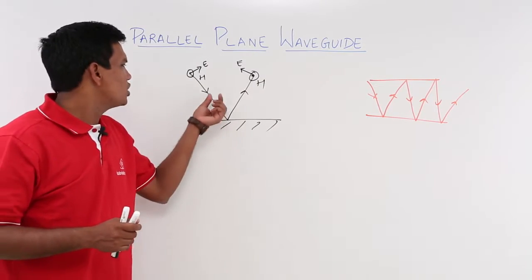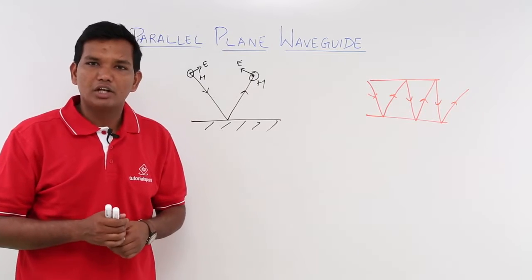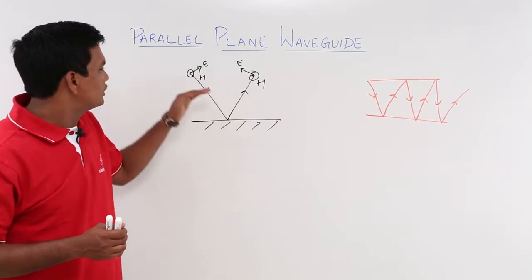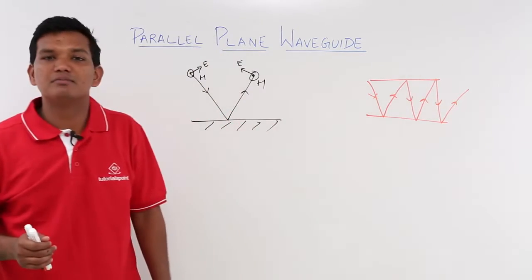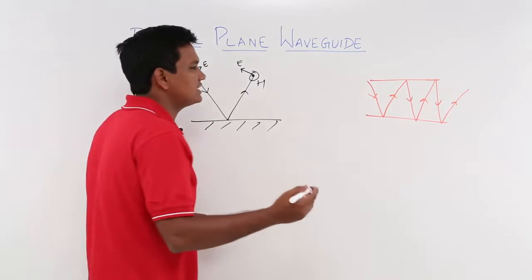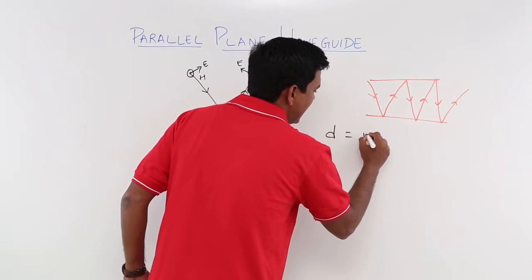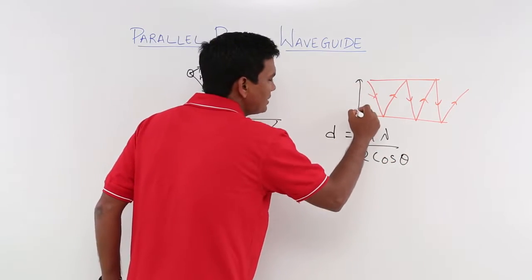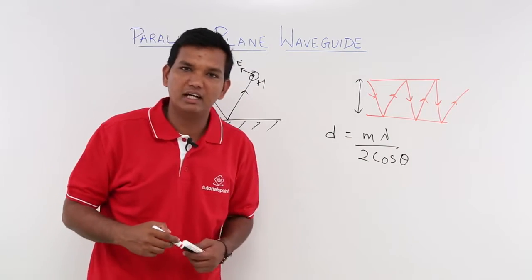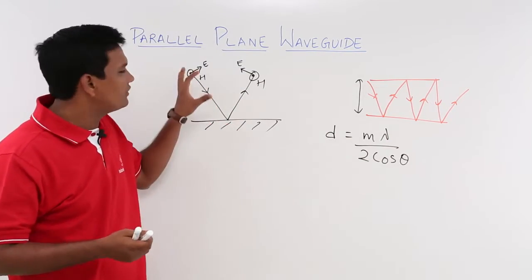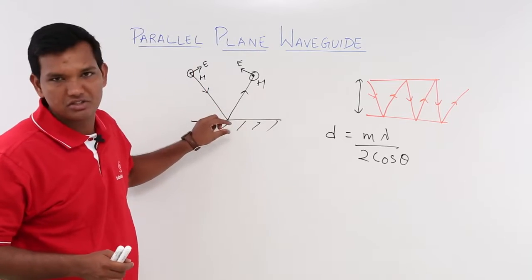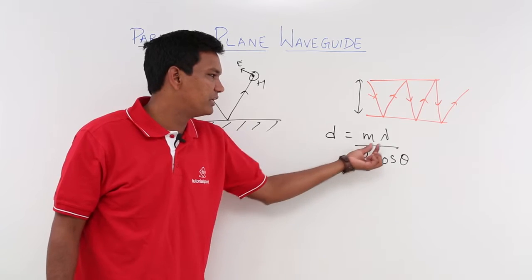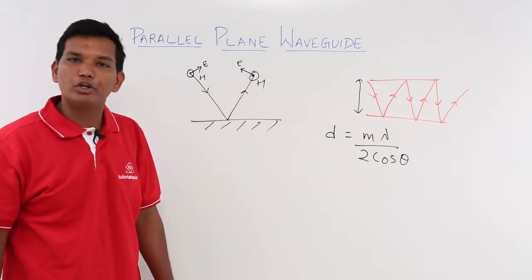Now the next question is: why is this wave not losing its energy? The key is that if you want the wave to not lose any energy, the distance between the two plates must be a certain specific amount. If this distance d equals m·λ/(2·cosθ), then the wave will satisfy the boundary conditions such that it will not lose any energy.